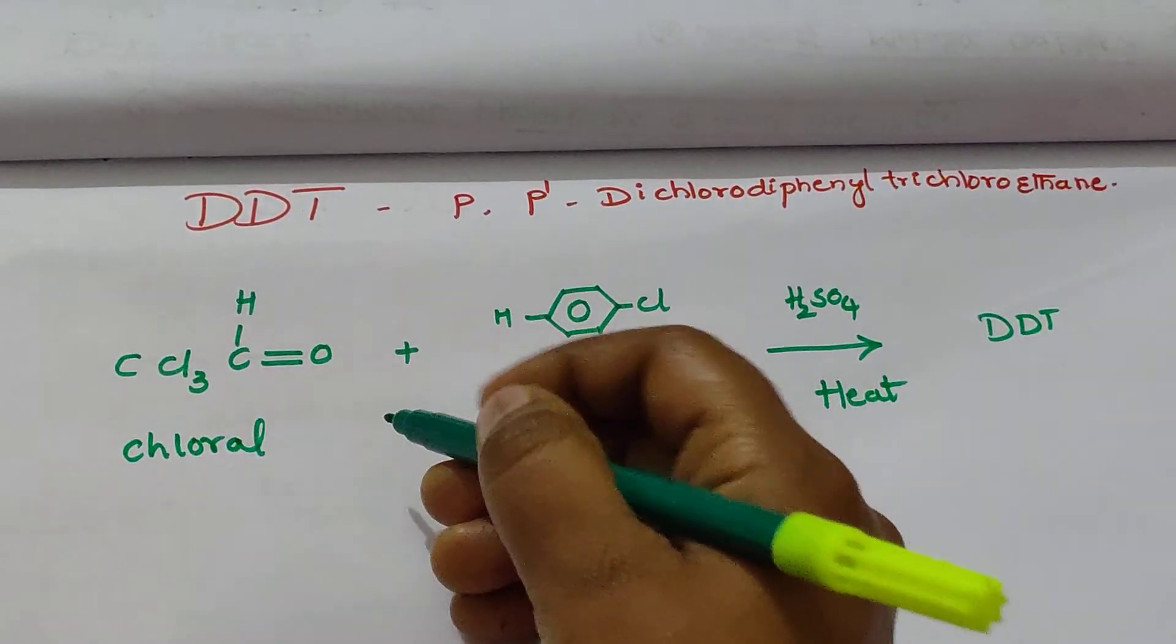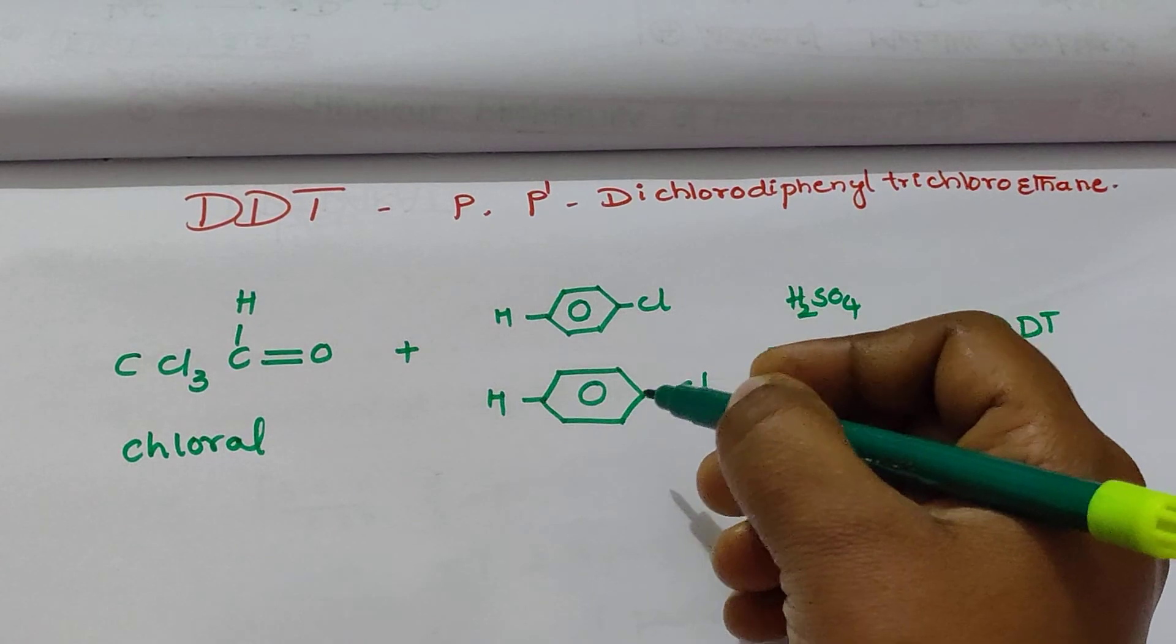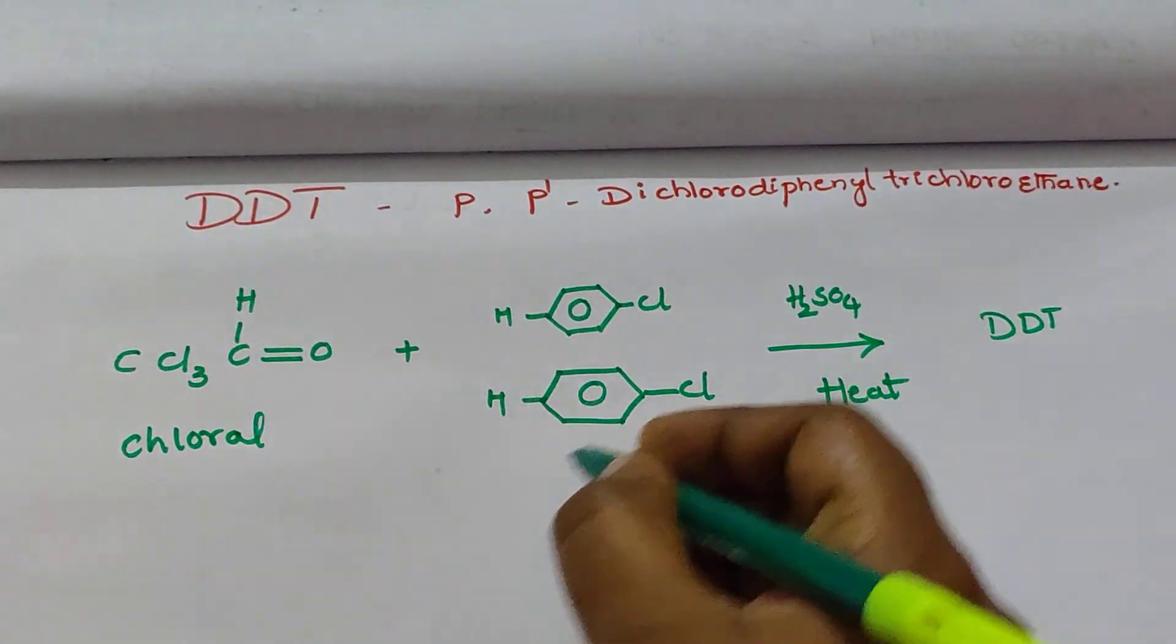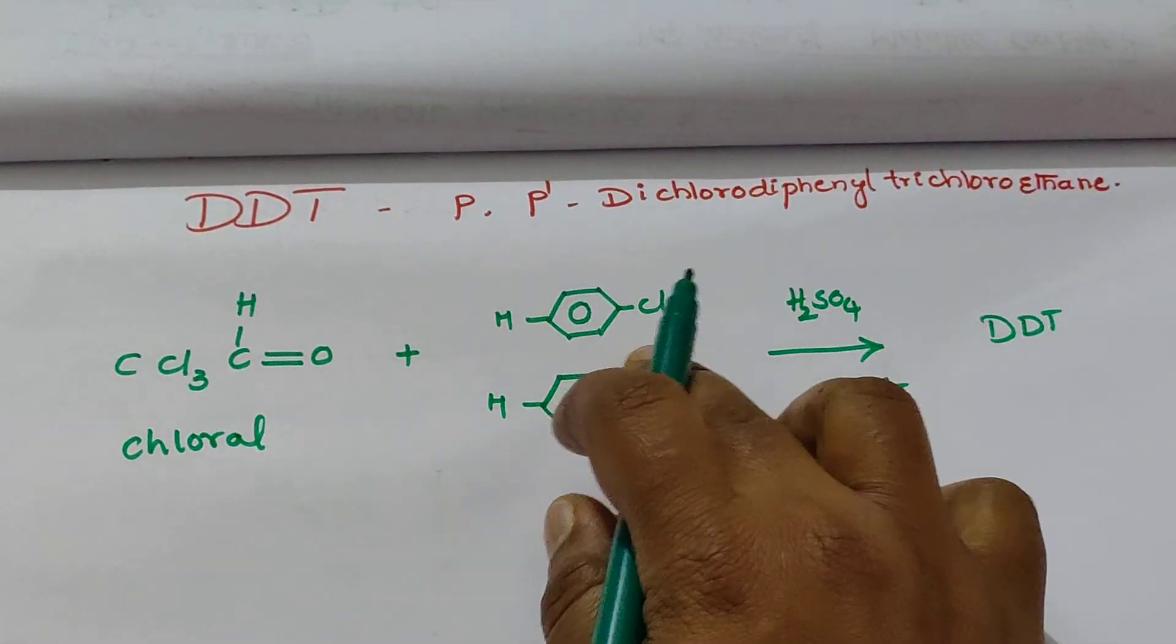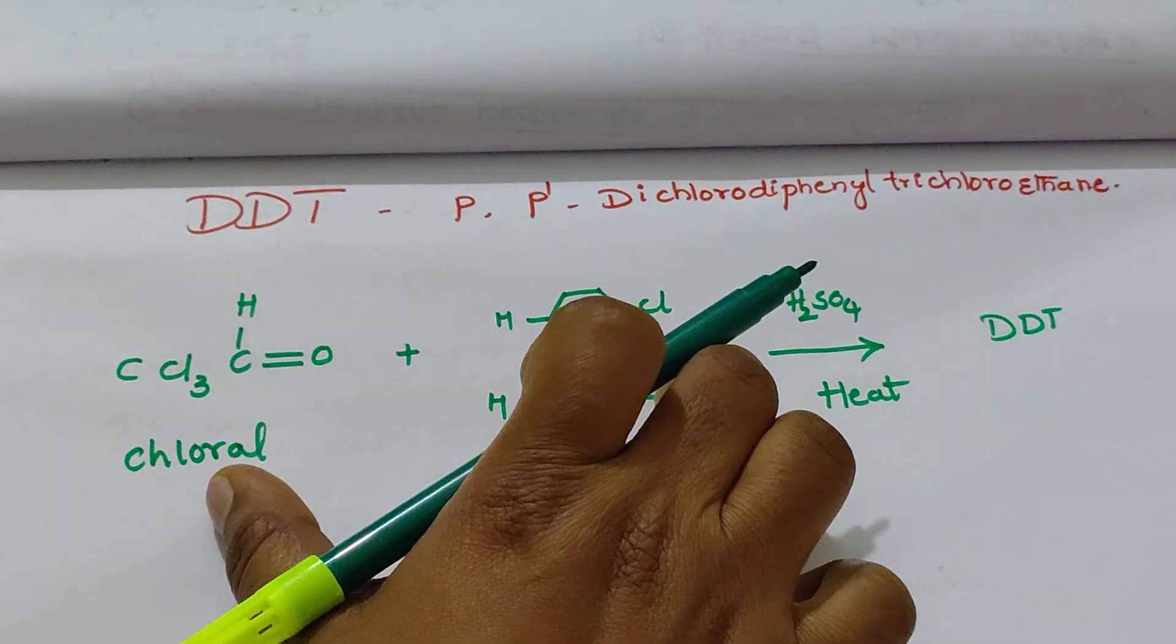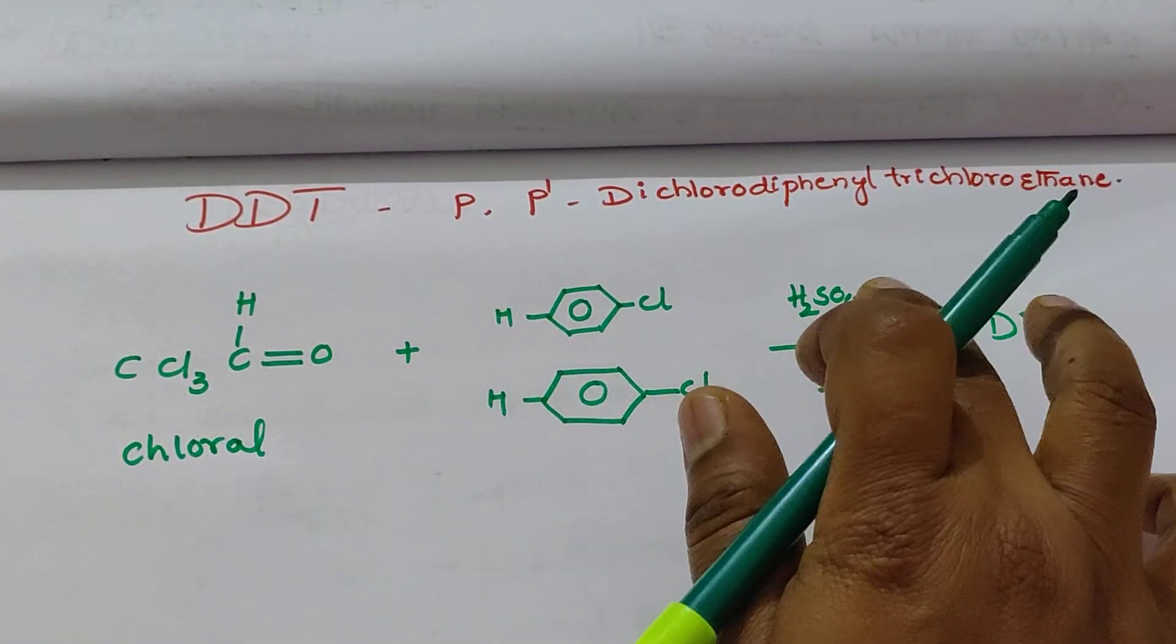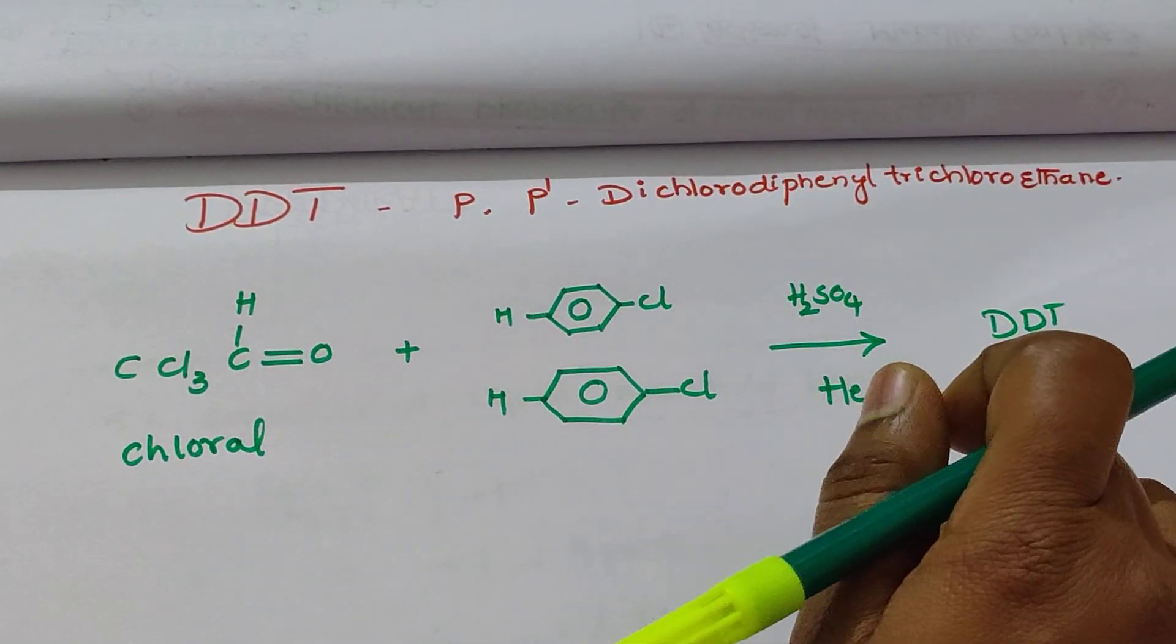Chloral is treated with two chlorobenzenes in presence of H2SO4, sulfuric acid. The sulfuric acid is a dehydrating agent.